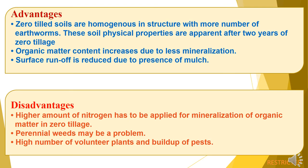Advantages of zero tillage: zero tilled soils are homogeneous in structure with a greater number of earthworms. These improved soil physical properties are apparent after two years of zero tillage. Organic matter content increases due to less mineralization, and surface runoff is reduced due to the presence of mulch. Disadvantages: a higher amount of nitrogen has to be applied for mineralization of organic matter. Perennial weeds may be a problem, and there is a high number of volunteer plants and build-up of pests.